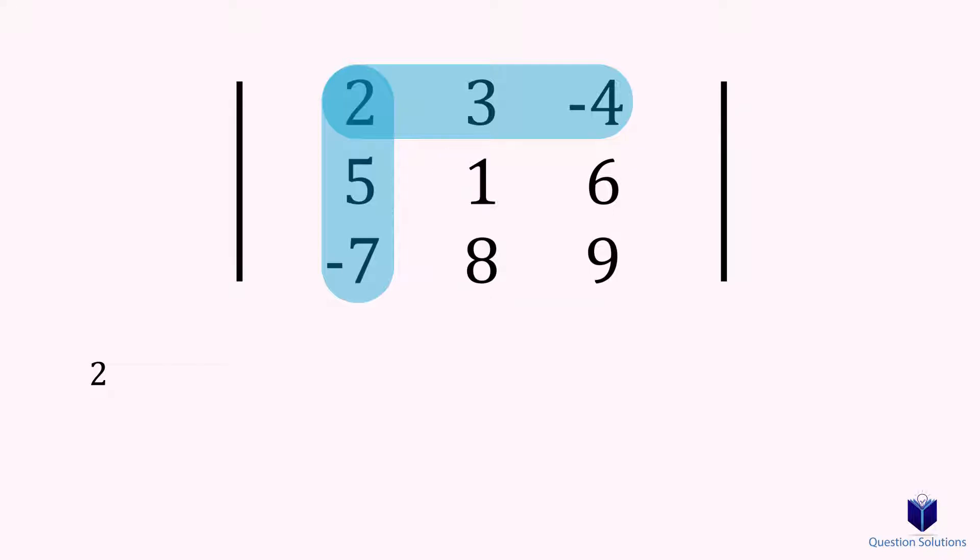We will first multiply across from top left to bottom right, that would be 1 multiplied by 9. The next multiplication will be subtracted from this value, so we will write a subtraction sign. Next multiplication is top right multiplied by bottom left corner, which would be 6 by 8.